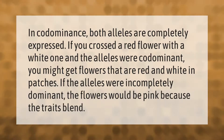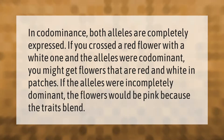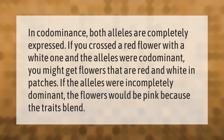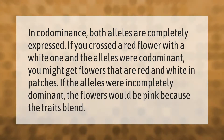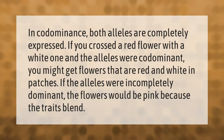In codominance, both alleles are completely expressed. If you crossed a red flower with a white one and the alleles were co-dominant, you might get flowers that are red and white in patches. If the alleles were incompletely dominant, the flowers would be pink because the traits blend.